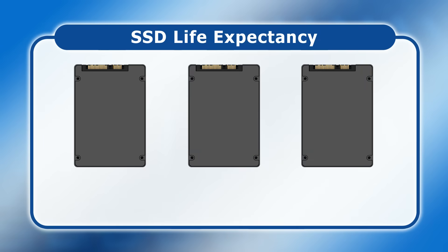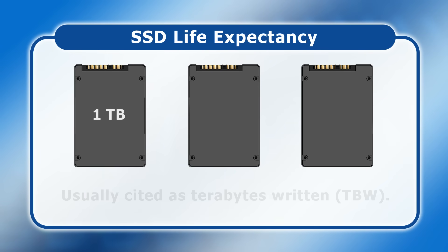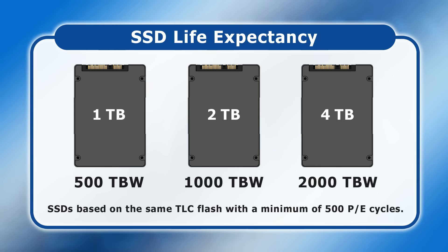Today, manufacturers usually express the minimum life expectancy of their SSDs via a terabytes written or TBW value that inevitably varies with drive capacity. For example, if we have 1, 2, and 4 terabyte SSDs based on the same TLC flash with a minimum of 500 program-erase cycles, then the 1 terabyte drive will be rated 500 terabytes written, the 2 terabyte 1,000 terabytes written, and the 4 terabyte 2,000 terabytes written. This highlights how SSD capacity has become a measure not just of how much data we want to store, but how frequently we want to change it.